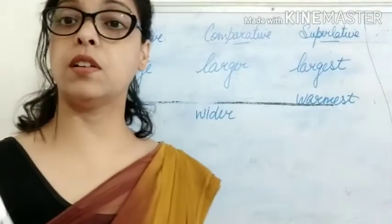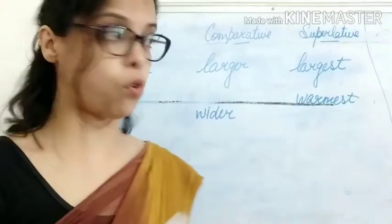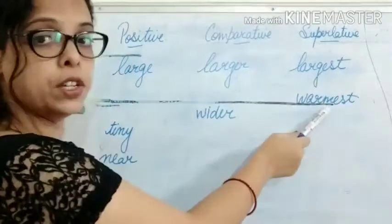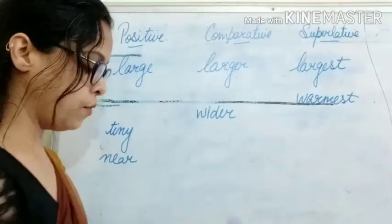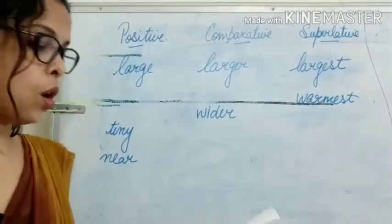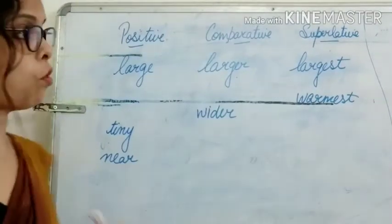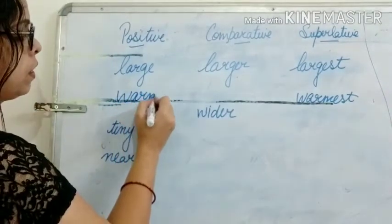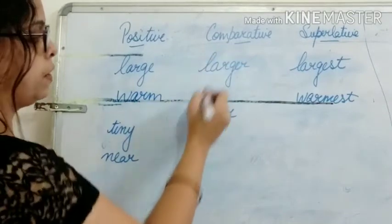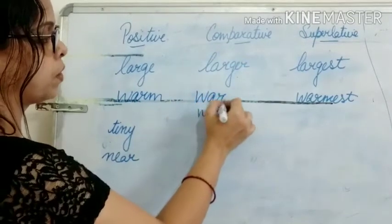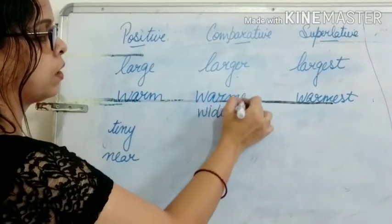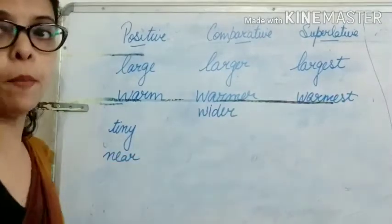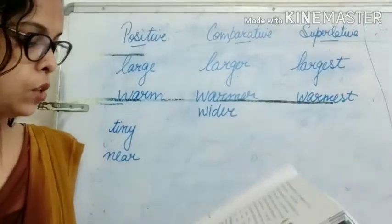Now 'warmest' — this is the superlative form, already given. What you have to write is 'warm' in the positive form, and 'warmer' in the comparative form. So it becomes warm, warmer, warmest.